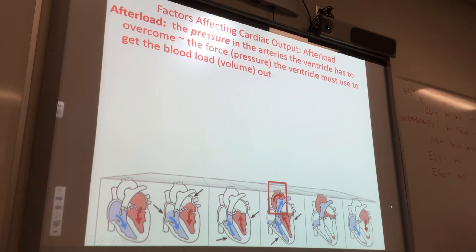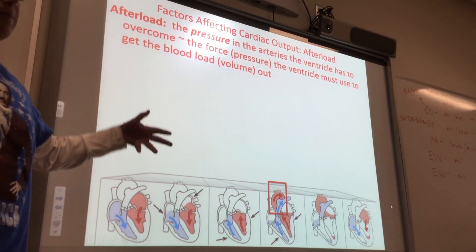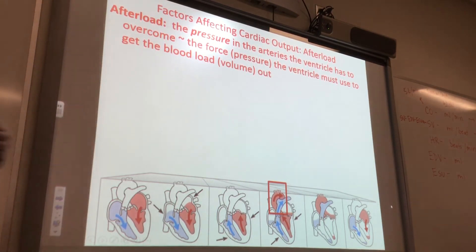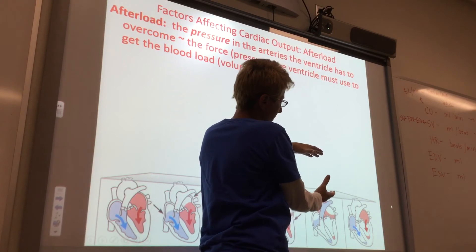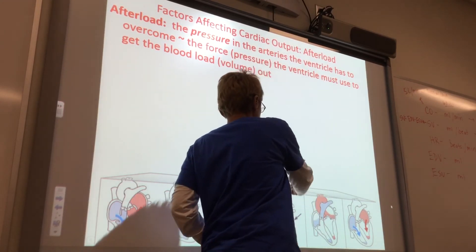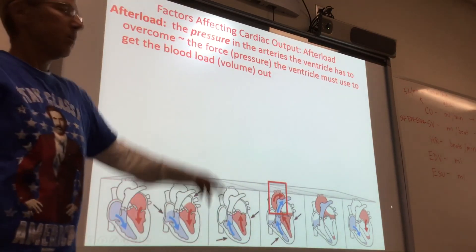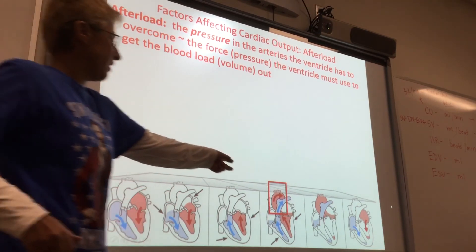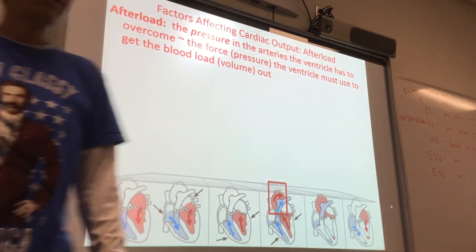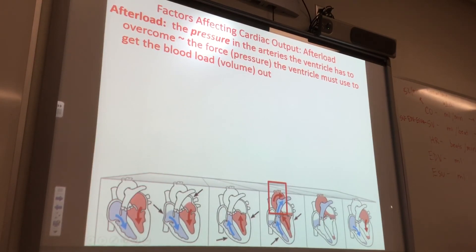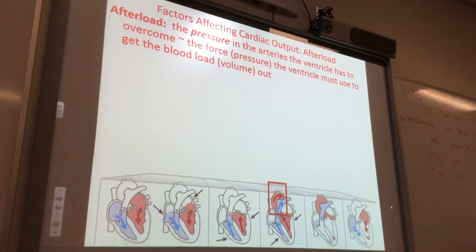So what happens when arteries downstream — say the femoral artery — get disease? They have a bunch of plaque in them and get smaller. That's going to increase the afterload, the pressure. And if you increase the afterload, the ventricles are going to have to contract even more forcefully to inject blood through the arteries. That's not good. Diseased blood vessels increase the afterload, meaning your heart has to pump harder, and it will fail sooner than it's supposed to.